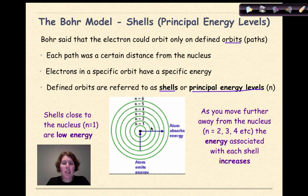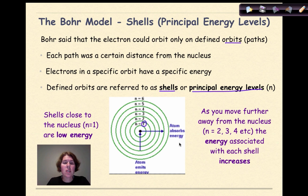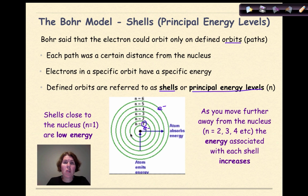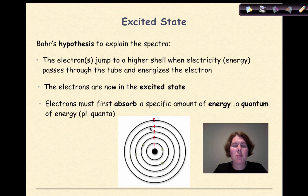Here's what you need to know about this model: shells that are close to the nucleus, like n=1, are at a low energy. As you move further away from the nucleus — like n=2, 3, 4, 5, or 6 — the energy associated with each shell increases. So an electron found in the lowest shell would have a low energy, but an electron found in a shell much farther away from the nucleus would have a higher energy.